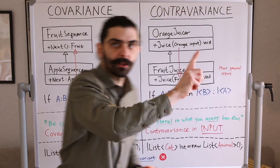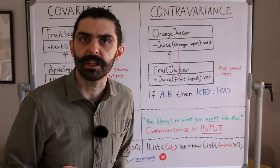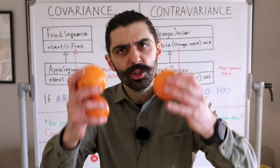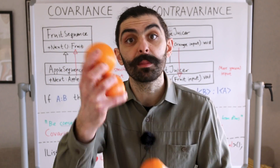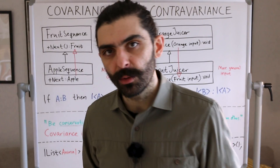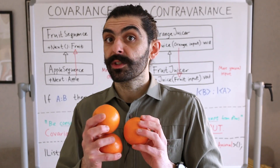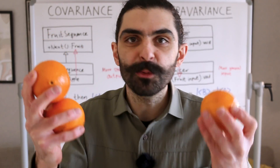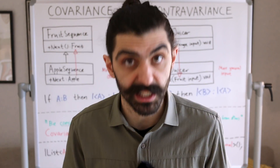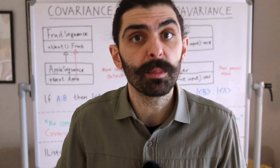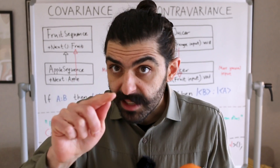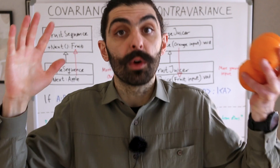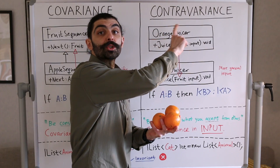Now let's move to the other side: contravariance. If you ask me for a machine that can juice oranges, but I give you a machine that can juice any fruit, you should be happy. Since oranges are fruit, you can still put oranges into the machine, but I've given you a more general machine so you can put any fruit into it. I substituted what you asked for with something that accepts a more general type. This is contravariance.